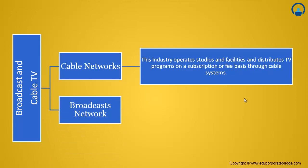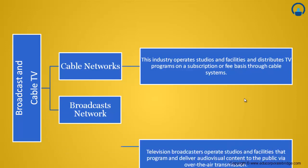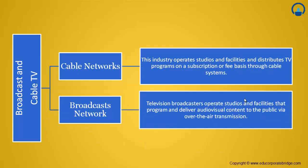The next segment is broadcast network television. Broadcasters operate studios and facilities that program and deliver audio-visual content to the public via over-the-air transmission, excluding cable and satellite television and operators that provide only online content. This is the broad classification of broadcast and cable television in the US.